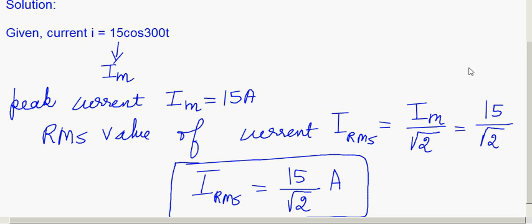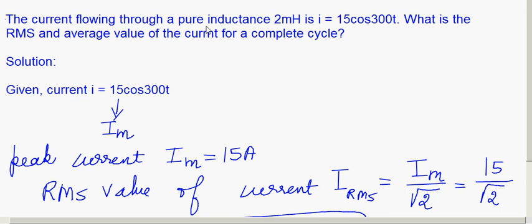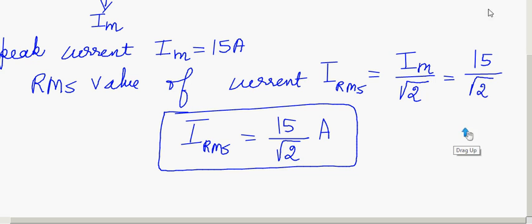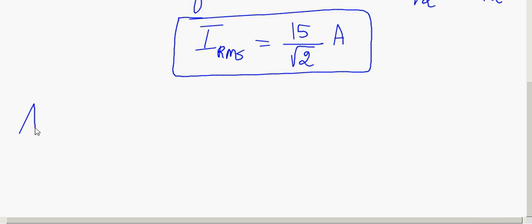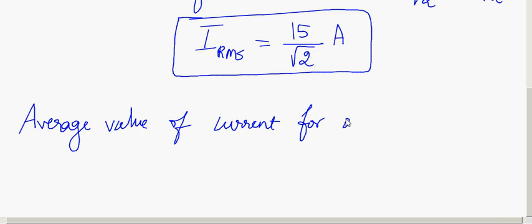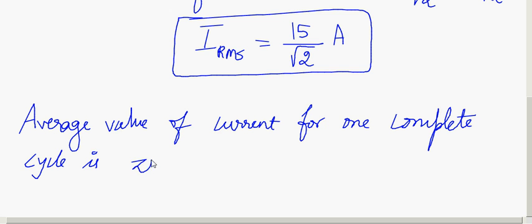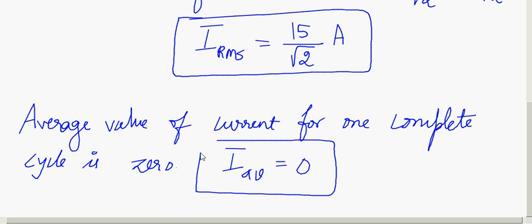Now, what is the average current? He is asking for the average current for one complete cycle. The average value of current for one complete cycle is 0, because of symmetry. When you take the average value for one complete cycle of a sinusoidal waveform, the positive and negative halves cancel, giving I_average = 0.